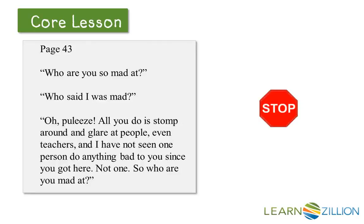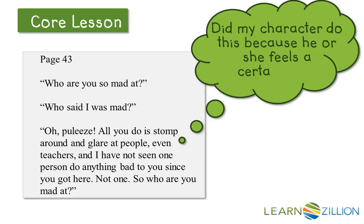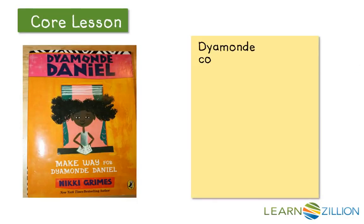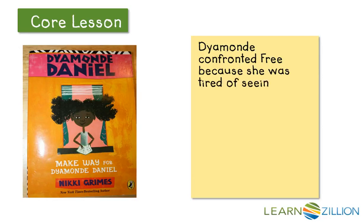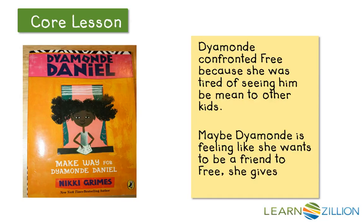I noticed that this was an important place to stop because Diamond had a strong reaction here — she's trying to figure out why Free is so mad. Did my character do this because he or she feels a certain way? Why did Diamond want to know why Free is so mad? I'm thinking that Diamond confronted Free because she was tired of seeing him be mean to the other kids. All of those times she saw Free be mean to kids, she realized there was probably a reason why Free was doing that, and she really wanted to figure out what that reason was. Maybe Diamond is feeling like she wants to be a friend to Free, because she gives him advice and is trying to help him change his behavior.